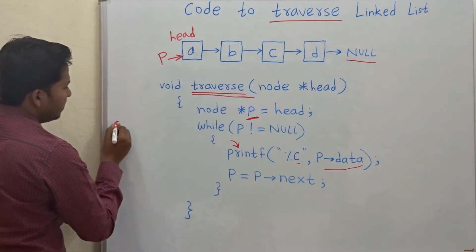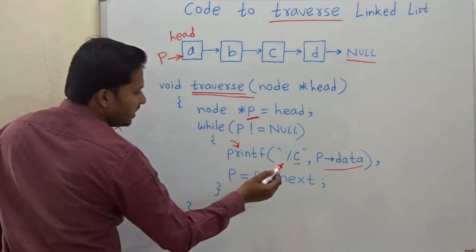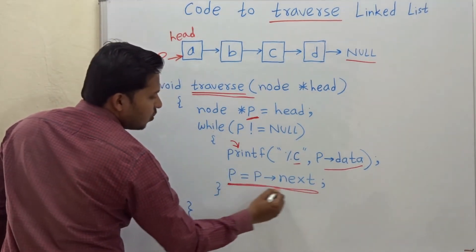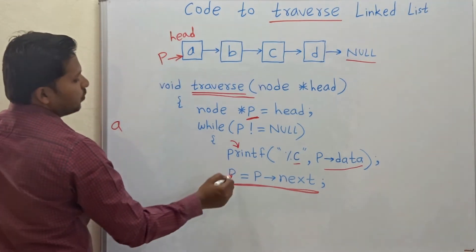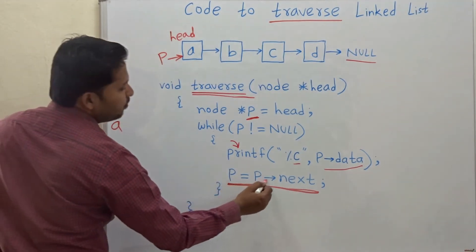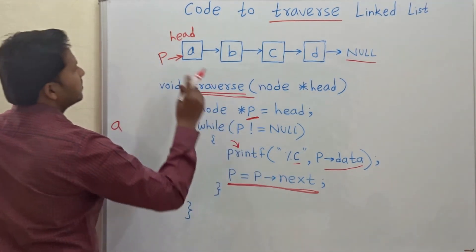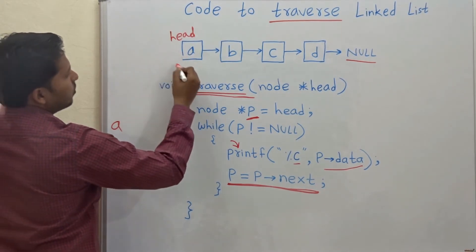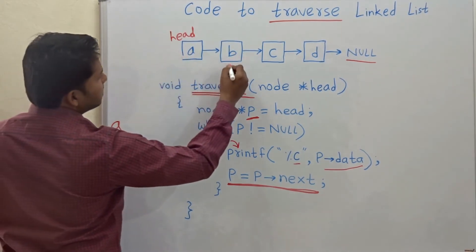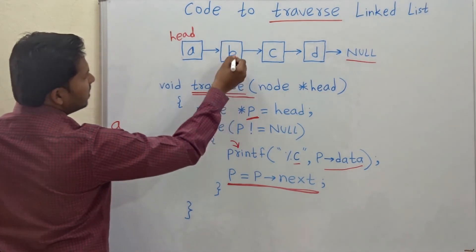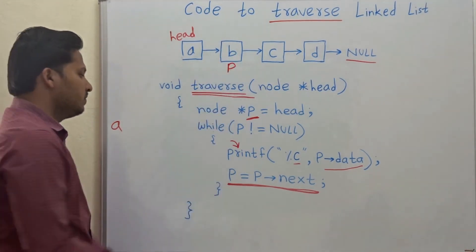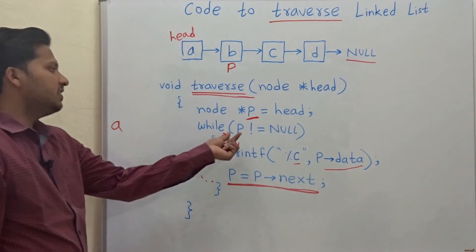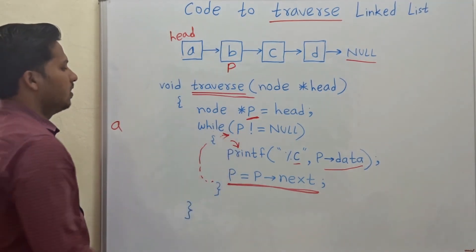After we print a node — suppose we print node A — we move to the next node in the linked list using p = p->next. Now p will point to the next node, and we go to the next iteration of the while loop.